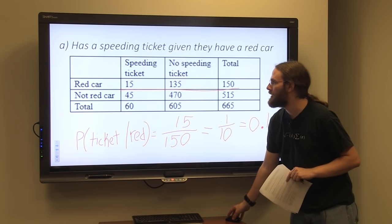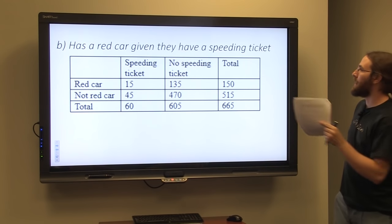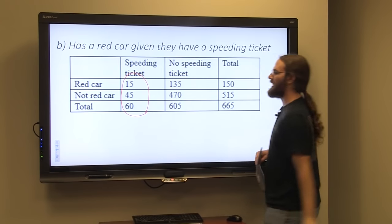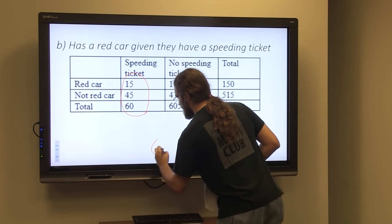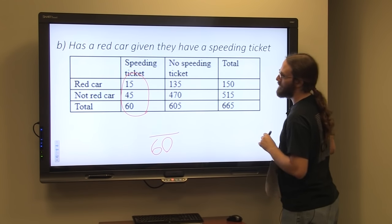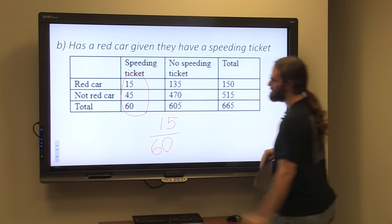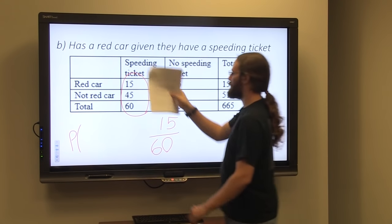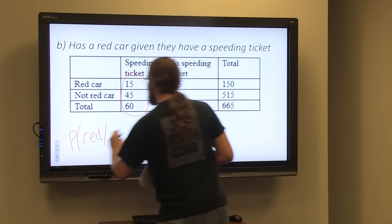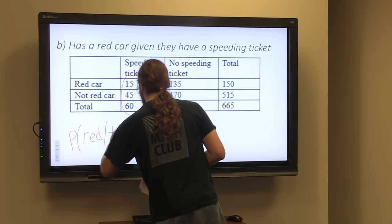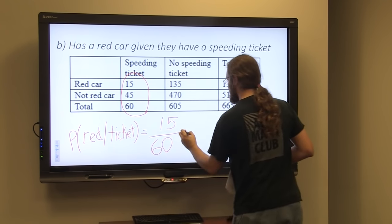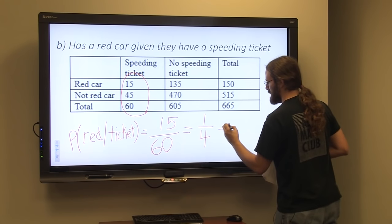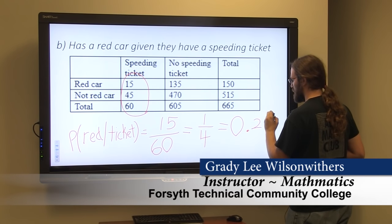Moving along to part B: the probability that a car is red given that it has a speeding ticket. We're going to look at the cars that have been ticketed — there are 60 cars total that were issued a ticket. Of those 60 cars, 15 of them were red. In probability notation, the probability that a car is red given it was issued a ticket is 15 over 60, which reduces to 1 over 4, or 0.25.